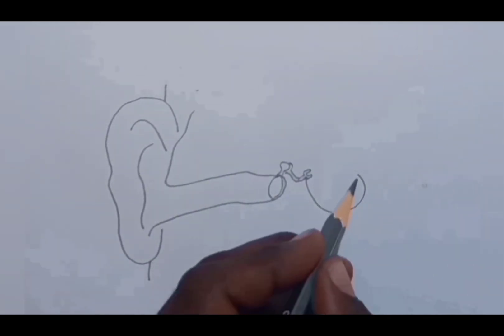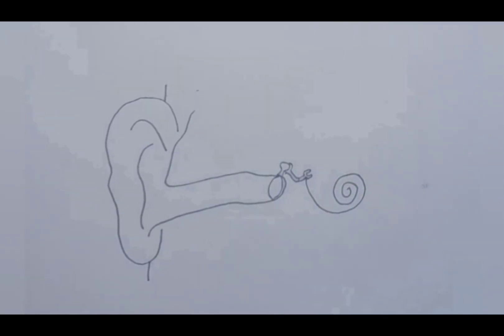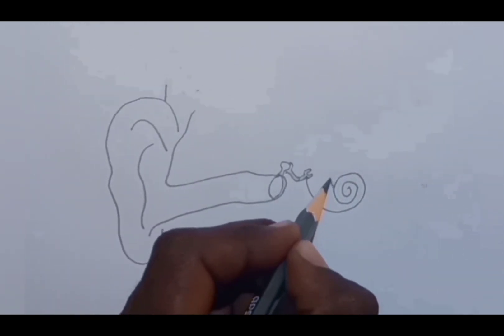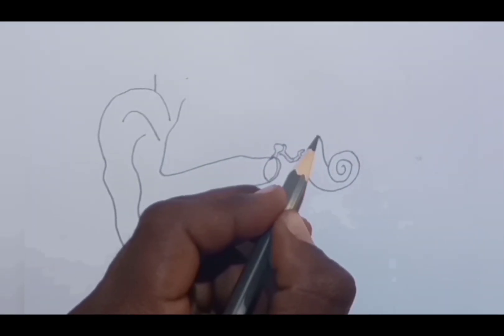This is the third bone, which is called stirrup because of its stirrup shape. Now here I am drawing a snail-like structure. You can see here, this is called cochlea.